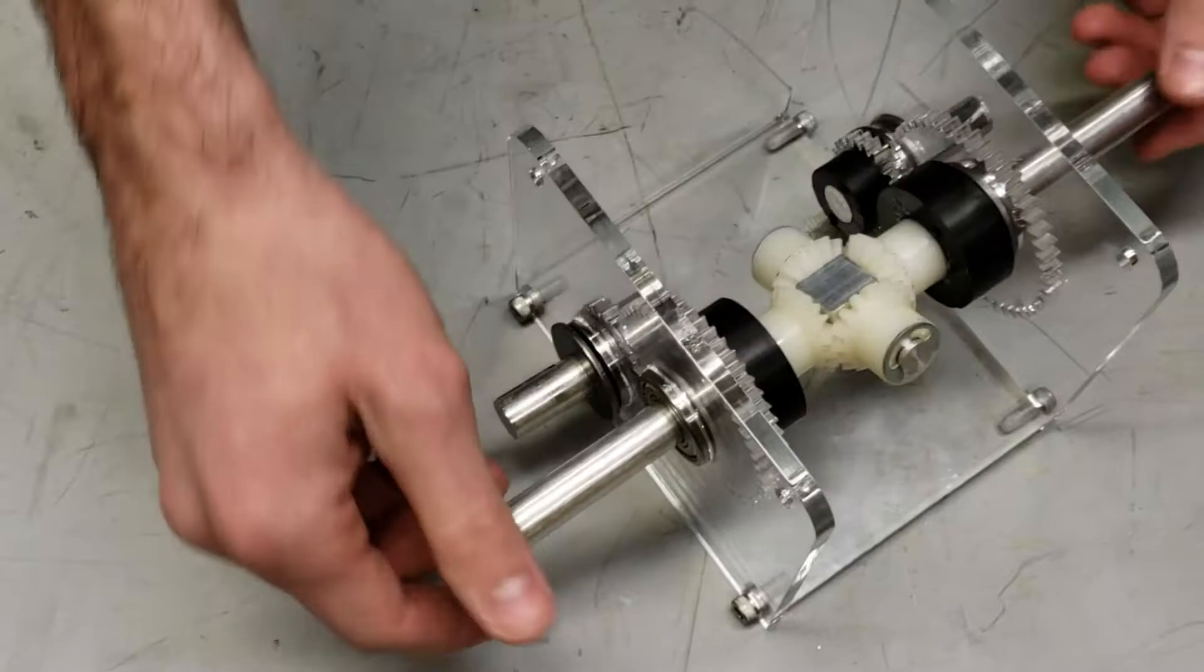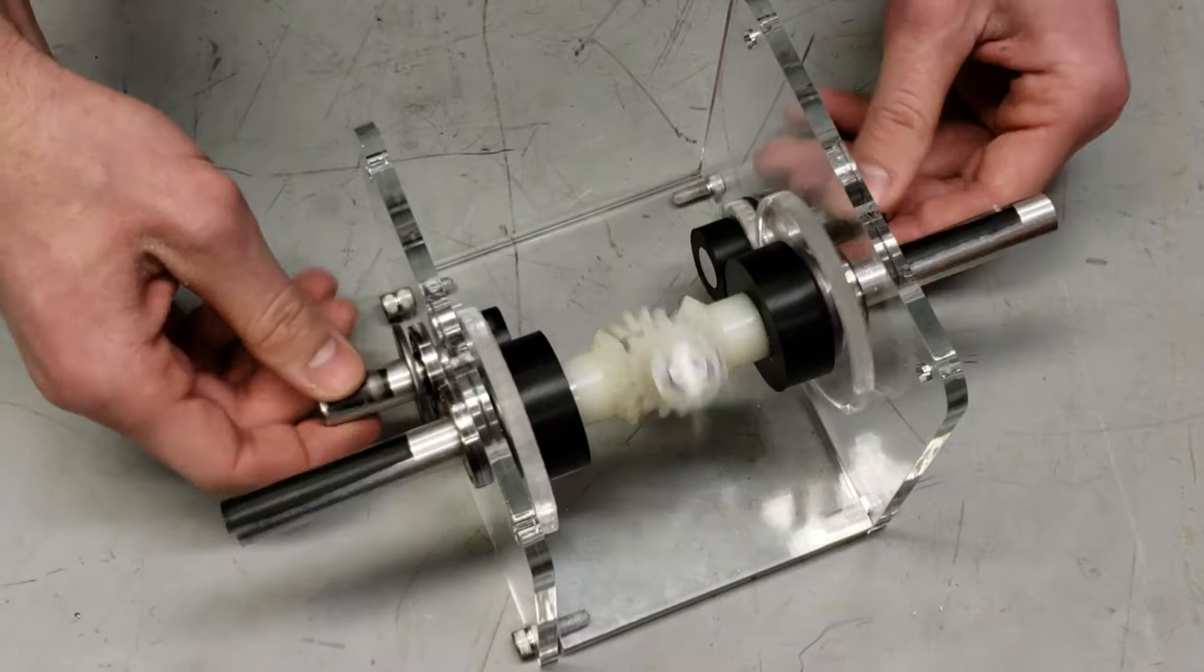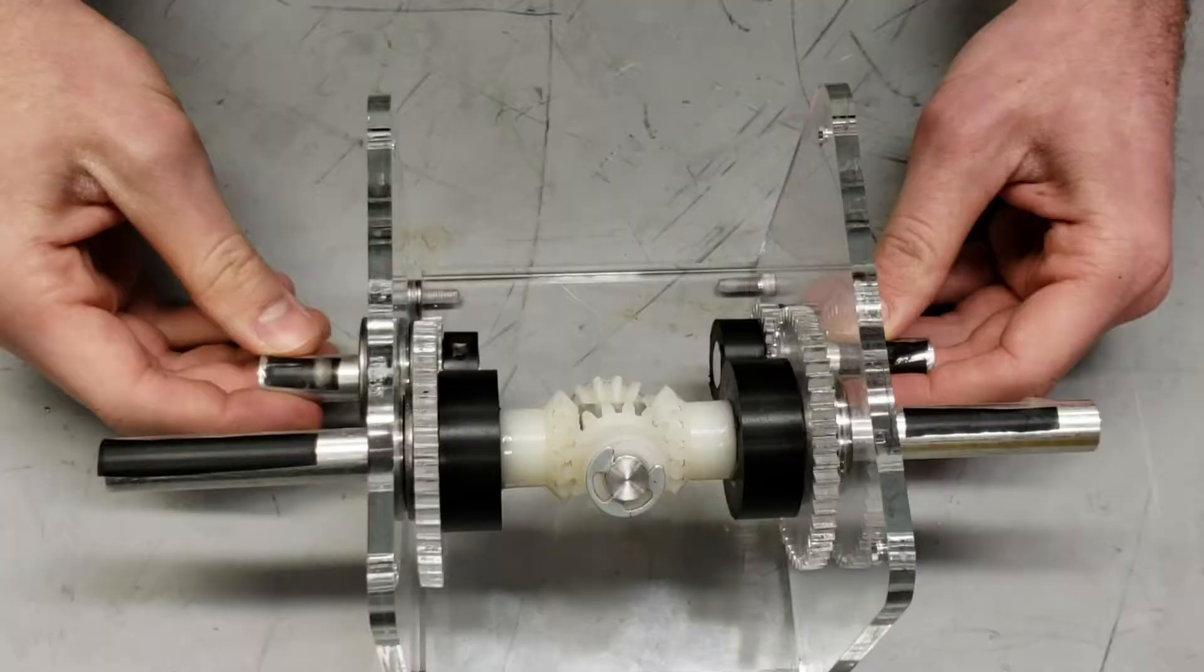When we hold one of the input shafts in place and we spin the other one, it gives us a 4 to 1 output ratio, and when we spin both of the input shafts, it gives us a 2 to 1 ratio.